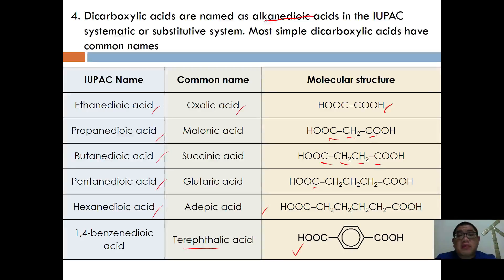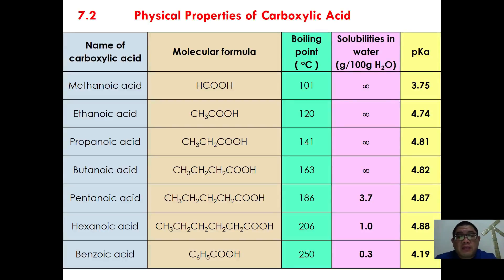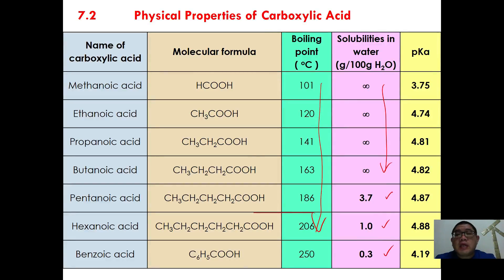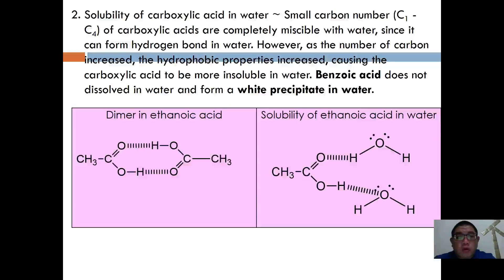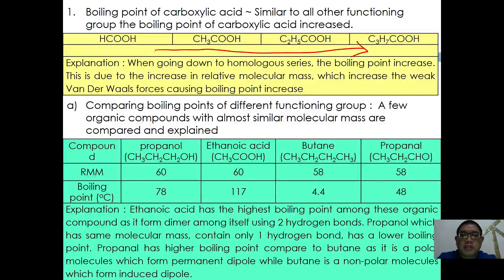Next, let's look at the physical properties of carboxylic acids. From the table of physical properties, boiling point increases when going down the homologous series. Most early carboxylic acids are very soluble in water; however, starting from pentanoic acid, hexanoic acid, and benzoic acid, they are considered sparingly soluble. Boiling point increases due to the increase in relative molecular mass, which strengthens the weak intermolecular forces.